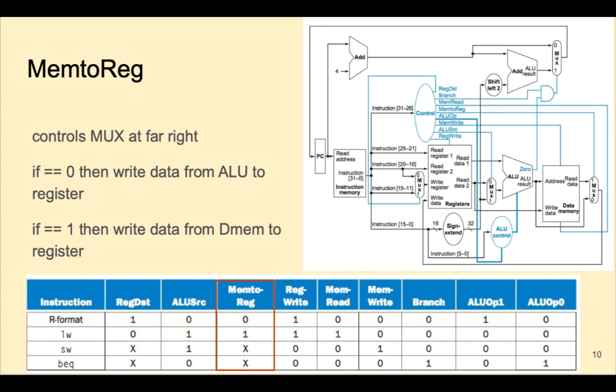The final control signal is MEM2REG. This control signal controls the multiplexer to the write of data memory. Notice that the output of that multiplexer goes back to the write data of the register file. The two inputs come from the ALU result and data memory.